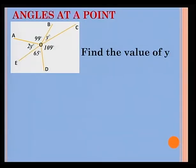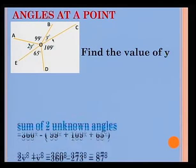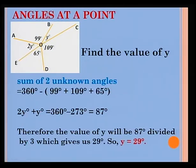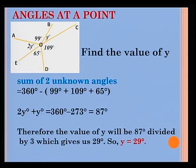Now we are going to have a look at angles at a point. You will remember that in our first program, we talked about a full turn, which is 360 degrees. In this figure, 360 degrees is divided into five parts. The sum of the two unknown angles will be 360 degrees minus the sum of 99 degrees, 109 degrees, and 65 degrees. Therefore, 2y plus y equals 87 degrees, and the value of y will be 87 divided by 3, which gives us 29 degrees. So the value of y is equal to 29 degrees.